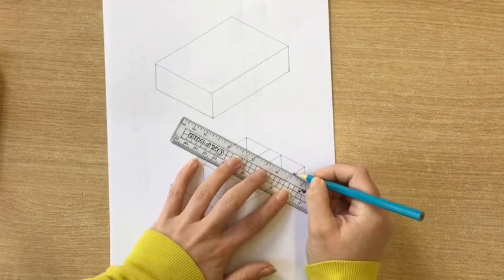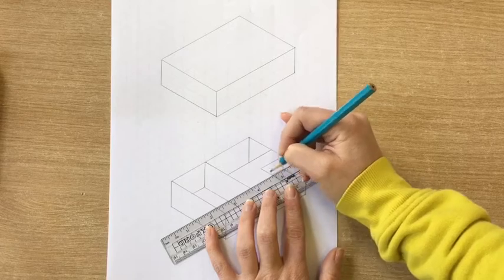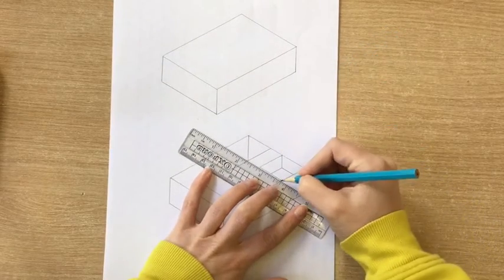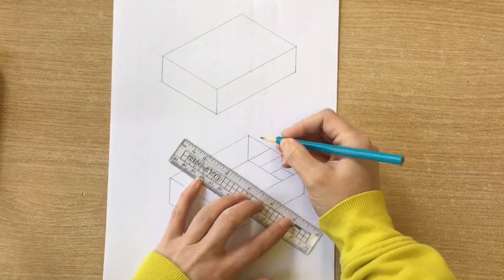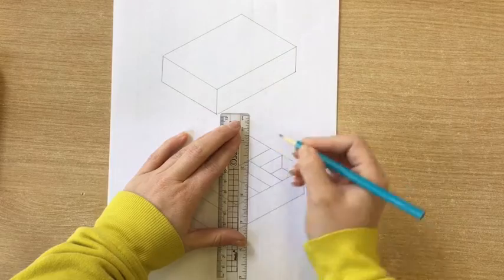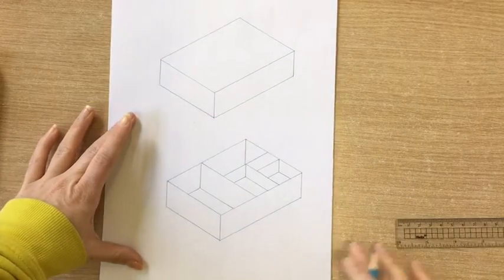Again all I am doing is following the lines on the grid. I haven't drawn any line that's not on the grid.